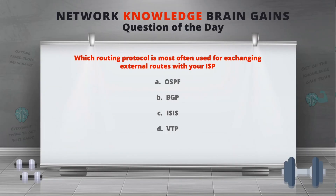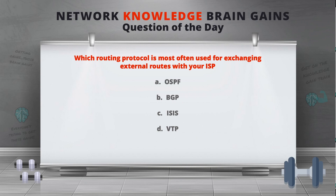The question of the day is: which routing protocol is most often used for exchanging external routes with your ISP? You have A) OSPF, B) BGP, C) IS-IS, or D) VTP. Take a second, throw your answer down below in the comment section, and before we wrap up the video we'll cover the answer.